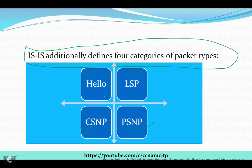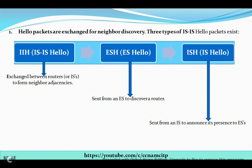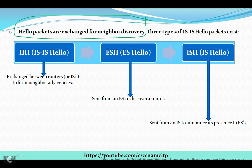First, I will talk about Hello packets. Hello packets are exchanged for neighbor discovery — that is the main functionality. Three types of IS-IS Hello packets exist: the first one is IIH, which is IS-IS Hello; the second one is ESH, which is End System Hello; and the third one is ISH, which is Intermediate System Hello.